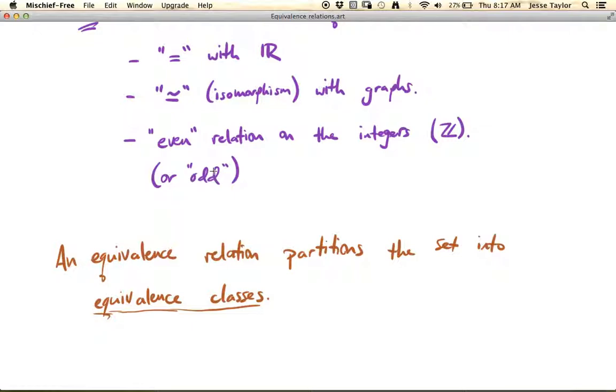If you think about all the stuff that's related, all the even integers will be related, all the odd integers will be related. And so those represent two equivalence classes. And together, the evens and the odds don't have anything in common. But if you put them together, you get all of the integers. So that's what it means to partition a set.